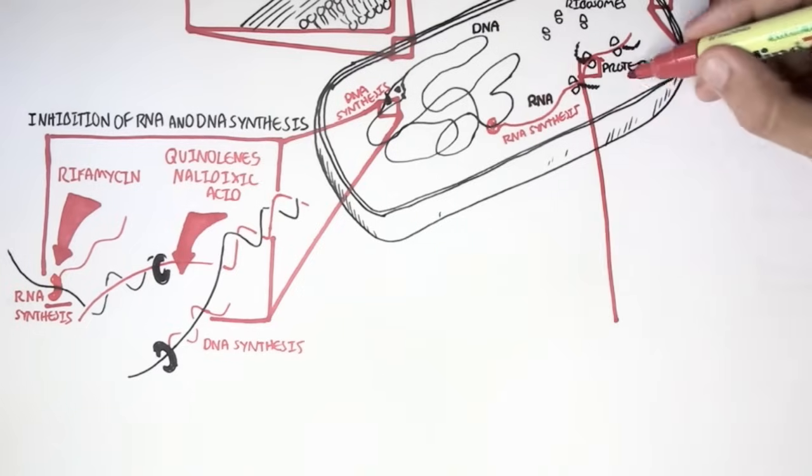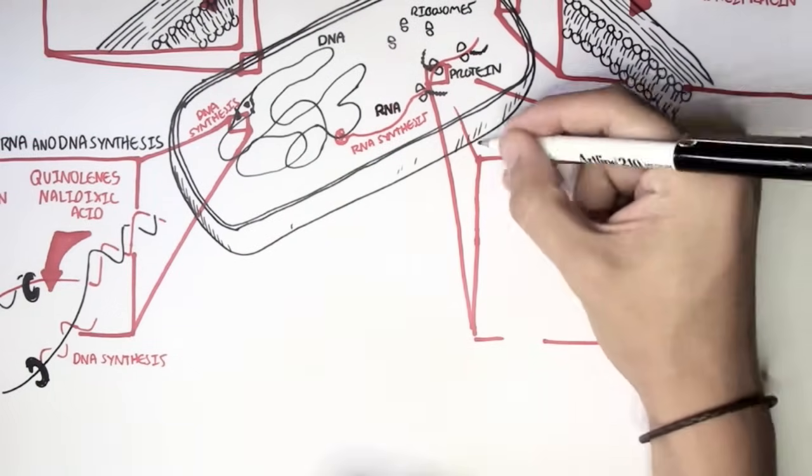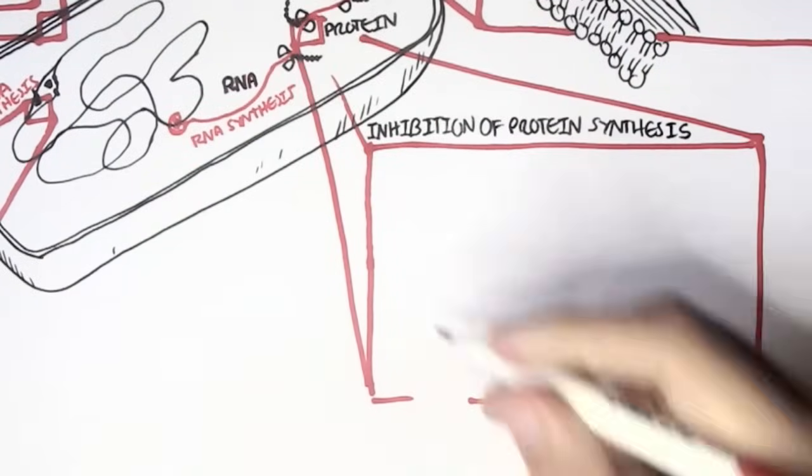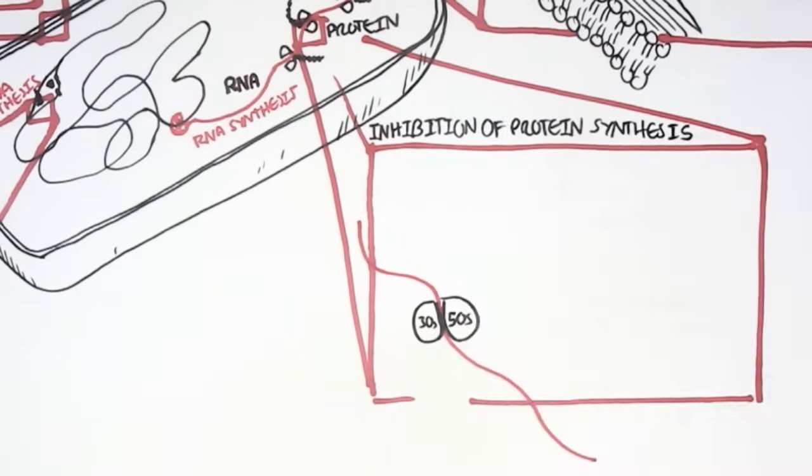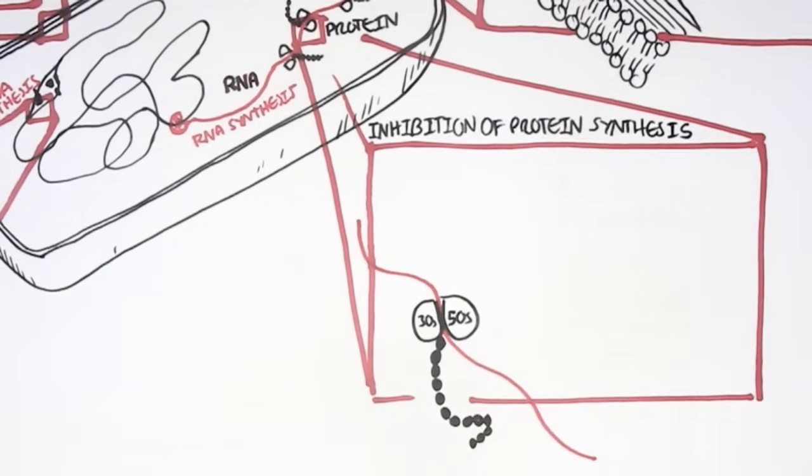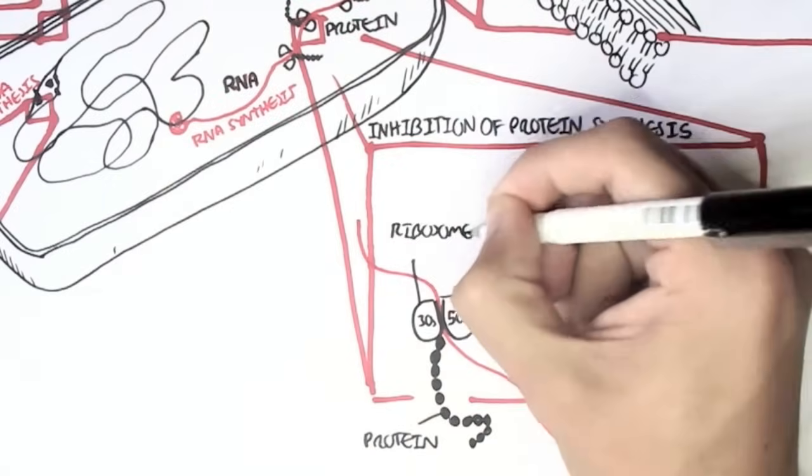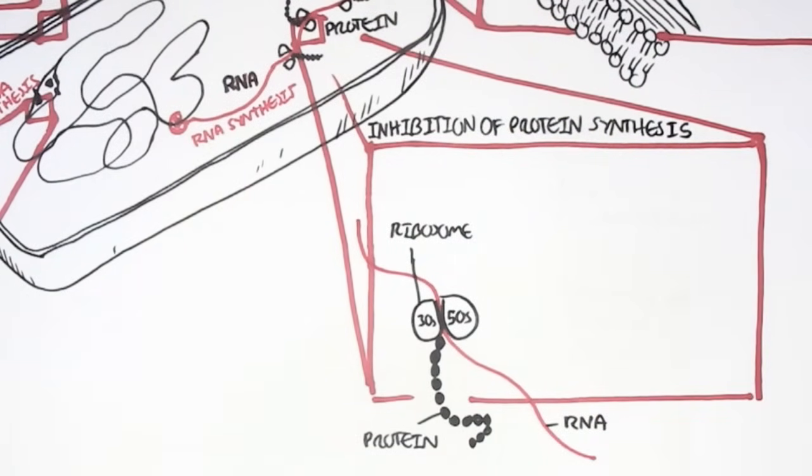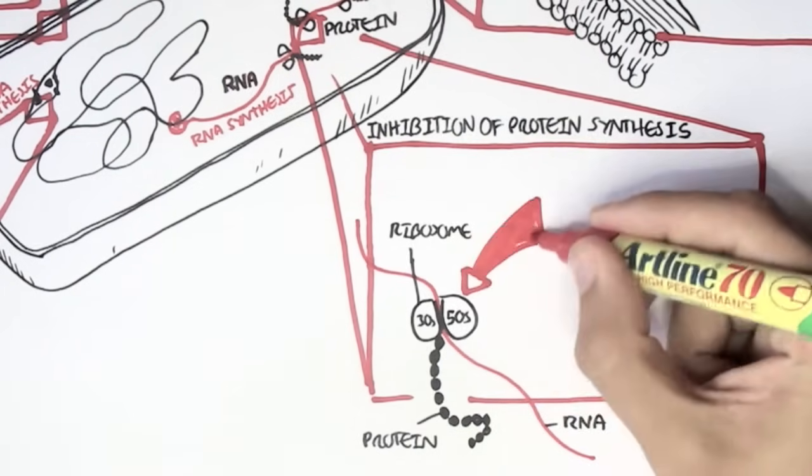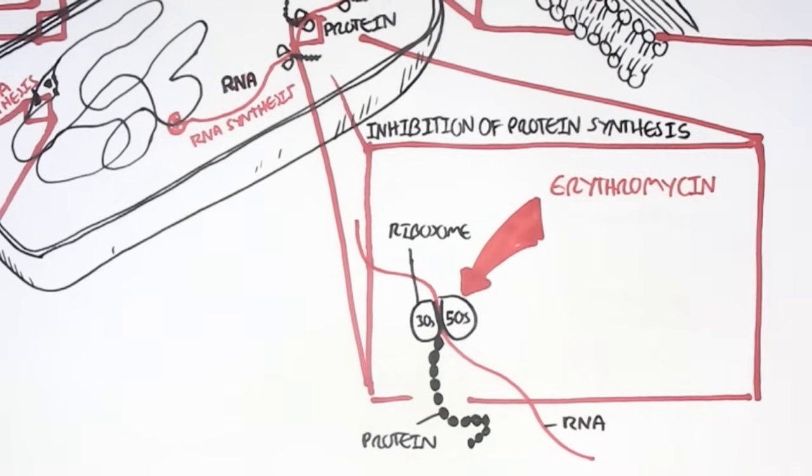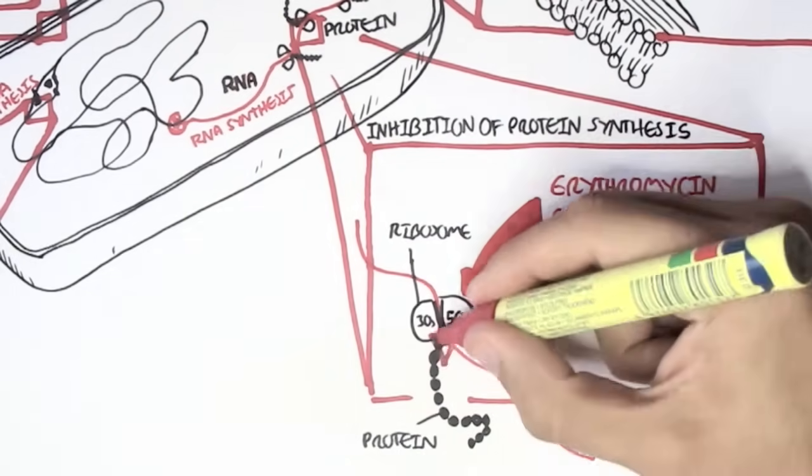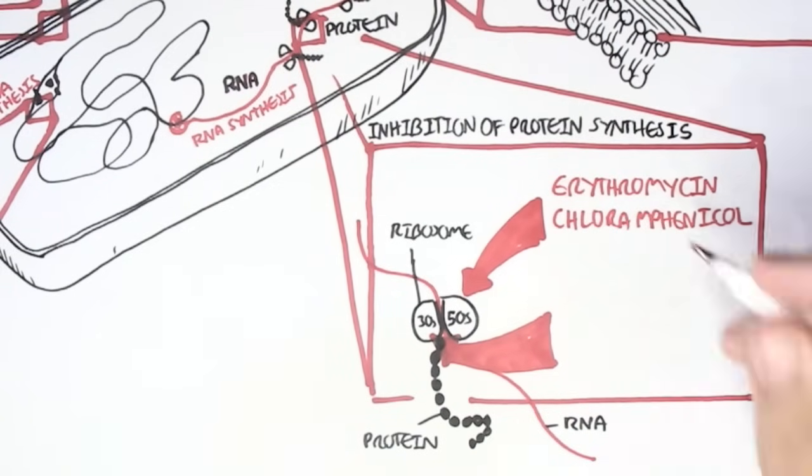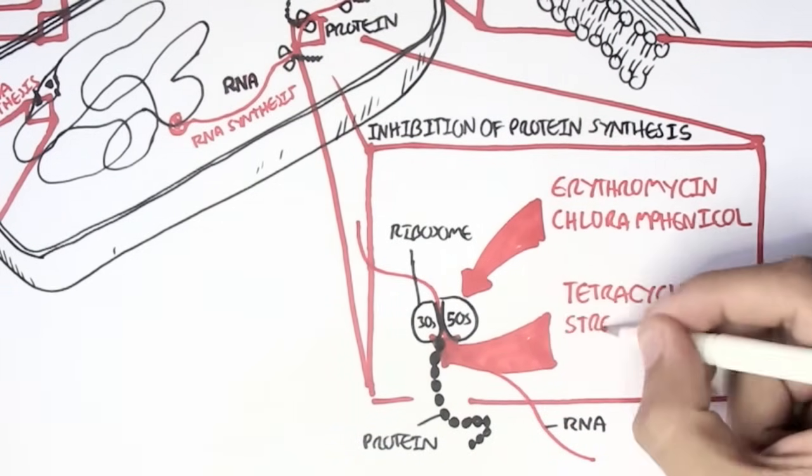Other classes of antibiotics also inhibit protein synthesis itself. Protein synthesis is carried out typically by ribosomes, which translate mRNA into proteins. Bacteria need to make proteins in order to survive. However, there are antibiotics that target either the 30S subunit or the 50S subunit of the ribosomes. Erythromycin and chloramphenicol target the 50S subunit of ribosomes, whereas there are tetracycline, streptomycin, and gentamicin that target the 30S subunit.